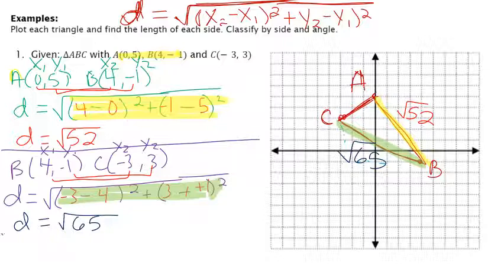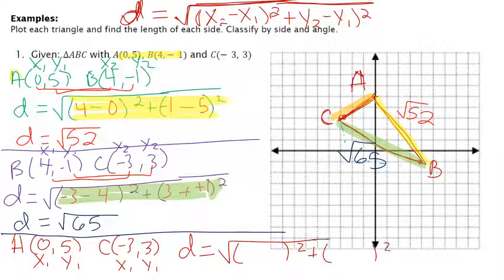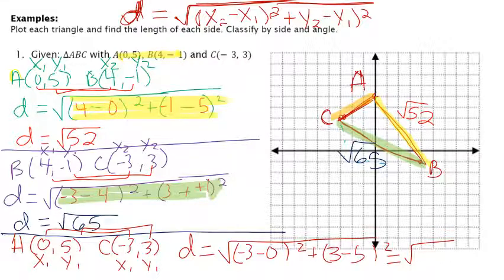Finally, we find the last side, AC. Point A is (0, 5) — x1, y1 — and point C is (-3, 3) — x2, y2. We put those into the distance formula: the square root of (-3 minus 0) squared plus (3 minus 5) squared, and we get √13.